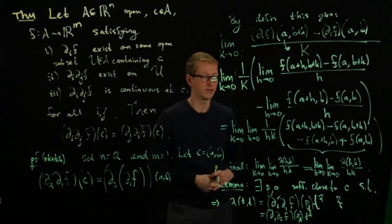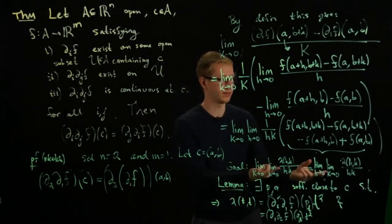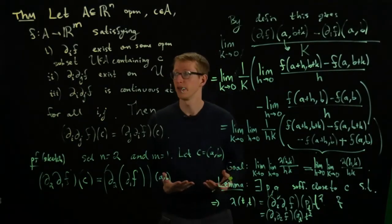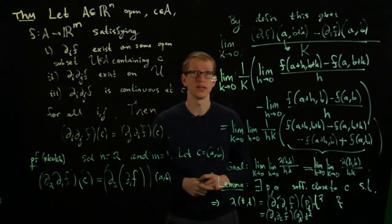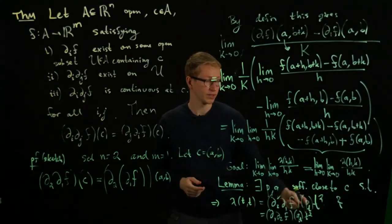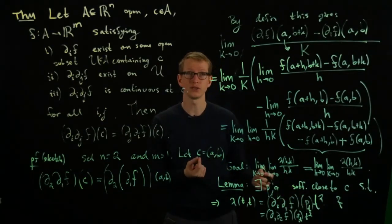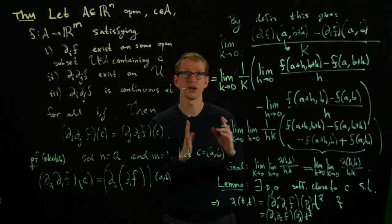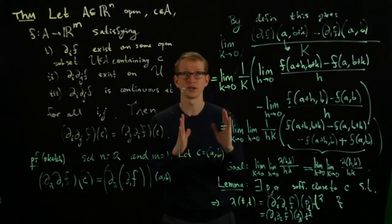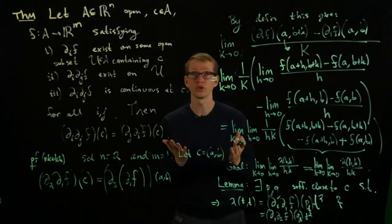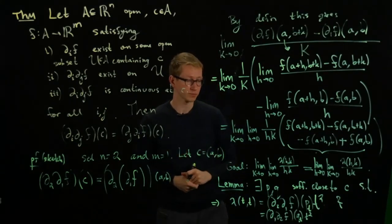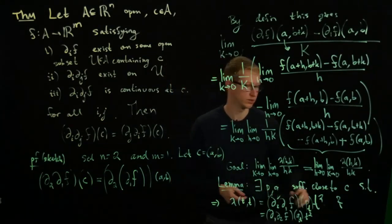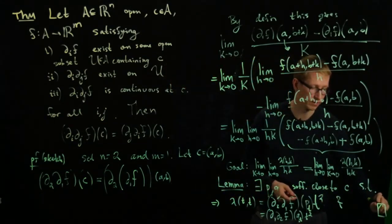This therefore proves that these two limits are the same. That's the idea behind the proof. Notice it was very crucial that we used continuity at the point C, because these points P(T) and Q(T), as this rectangle is getting smaller and smaller, these points are getting closer and closer to C—they have no choice. This actually concludes the proof of that theorem.